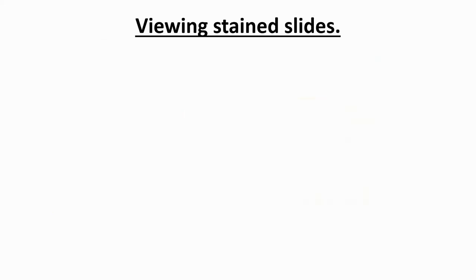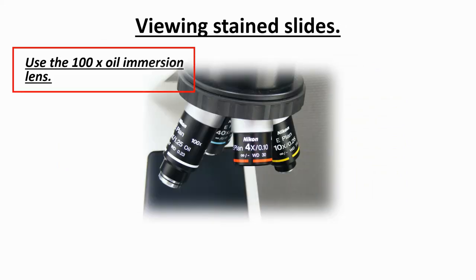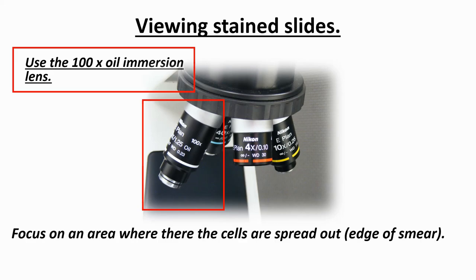Viewing the stained slides will need to be carried out using oil immersion. Take note of the oil immersion lens, which is marked with 100x and oil. When viewing the cells, focus on the edge of the smear where the cells are spread out.